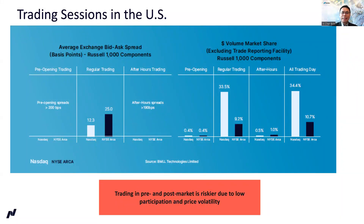On the left-hand side, you can see that during the pre-opening and after hours, the spread of the depth data is more than 200 basis points and 190 basis points respectively. When it comes to the regular trading hours, the bid-ask spreads suddenly narrowed to 12 basis points and 25 basis points respectively between Nasdaq and IZarka depth data. As you know, tighter spreads begets better trading volume. On the right-hand side, it is evident that the dollar trading value is higher during regular trading hours and Nasdaq has far better dollar-traded volume during the trading day.